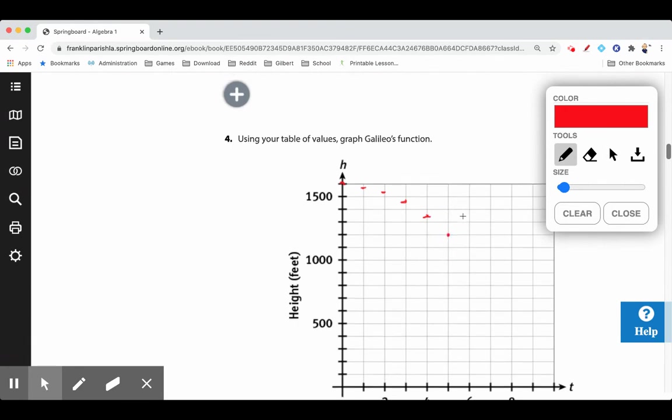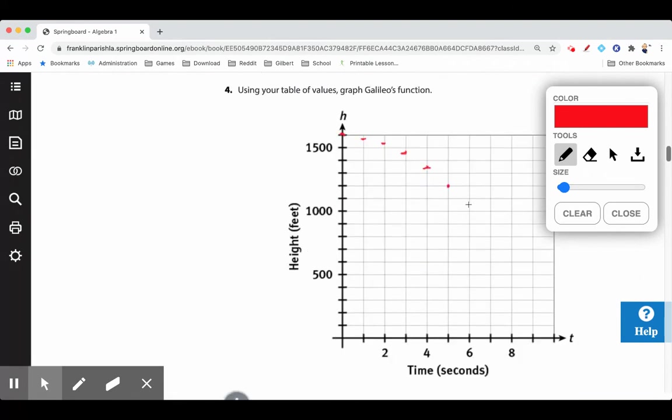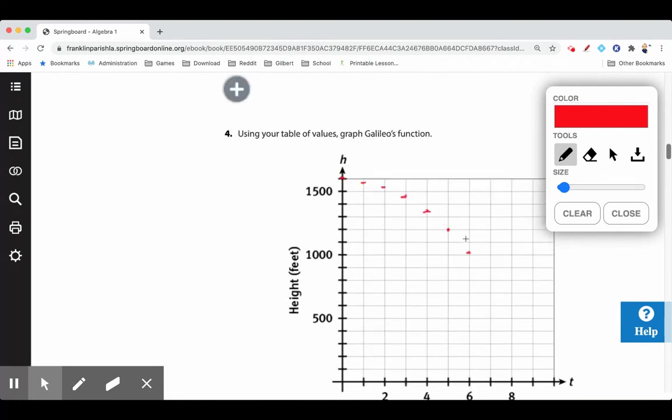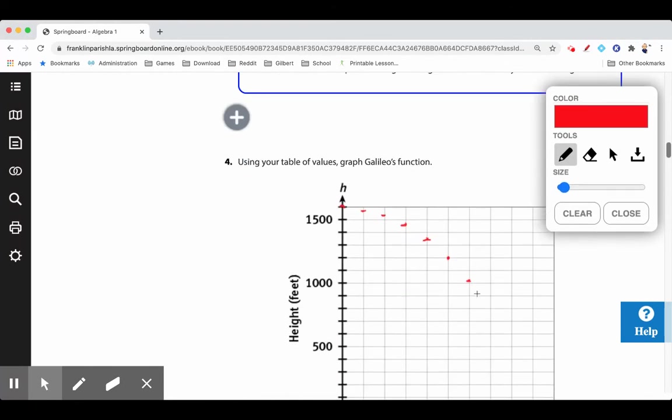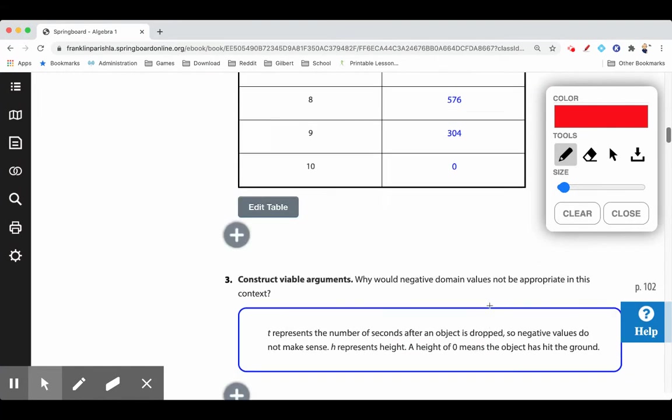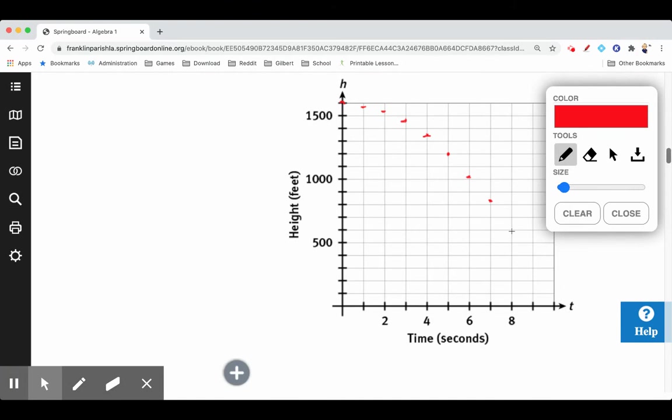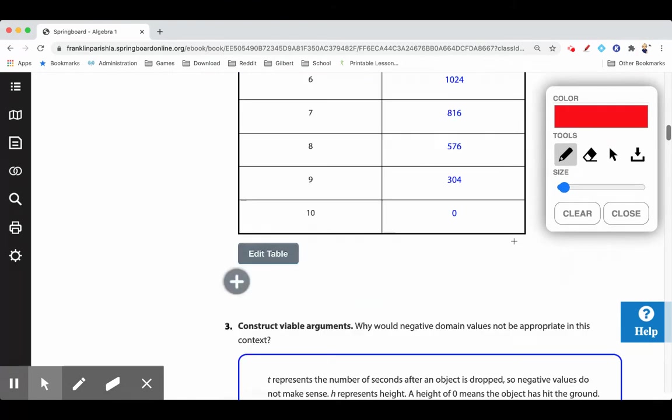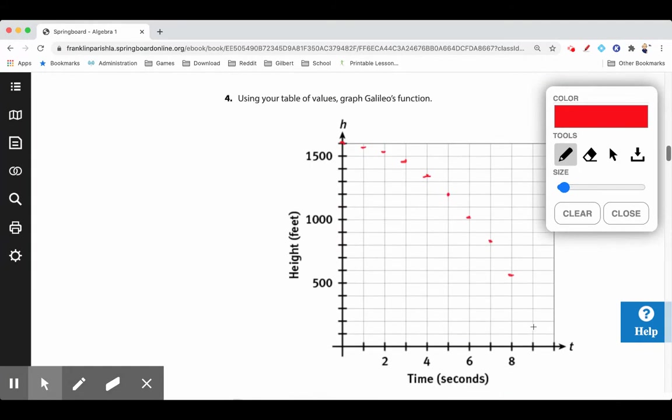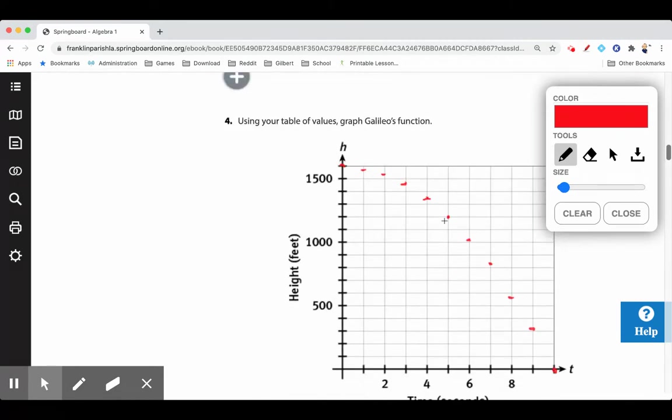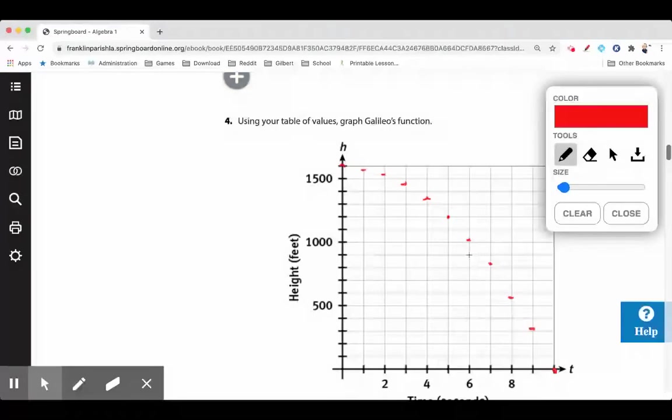No, fourteen fifty-six. And then thirteen forty-four, so about right here. Twelve hundred right there. One thousand twenty-four—one thousand twenty-four right about there. Eight hundred sixteen right about there. Five seventy-six—five seventy-six right about here. And then three oh four. And then zero. So if you graph it using these values on this table, this is sort of what it would look like. It's not a straight line, it's a curve. At first it takes a couple of seconds to even break a hundred feet, but then it starts speeding up, accelerating as it falls, and the gap between the numbers gets bigger and bigger.